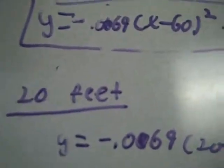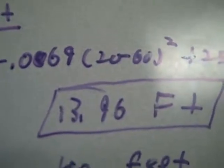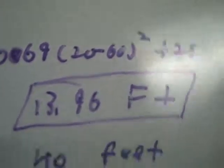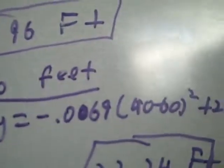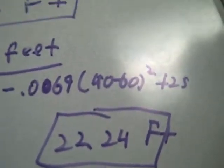Then we also had to find the height when it was 20 feet long, and the answer was 13.96 feet. And then we had to find how high it would be for 40 feet, and the answer was 22.24 feet.